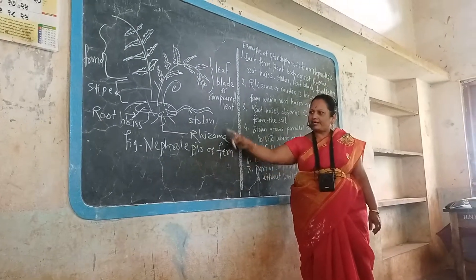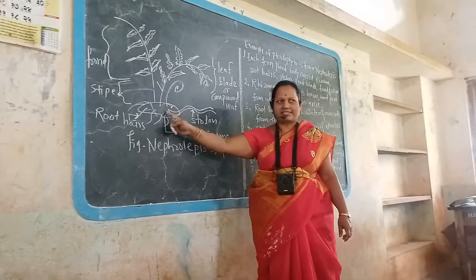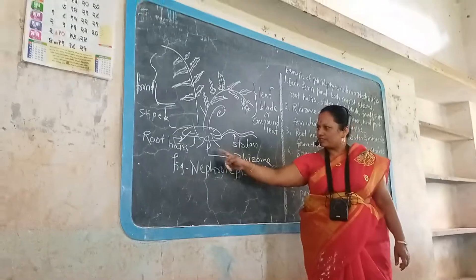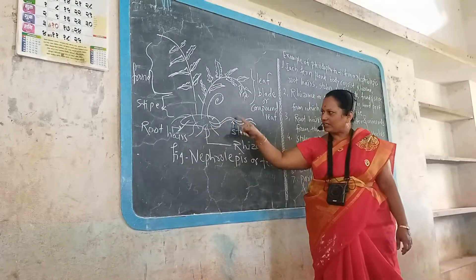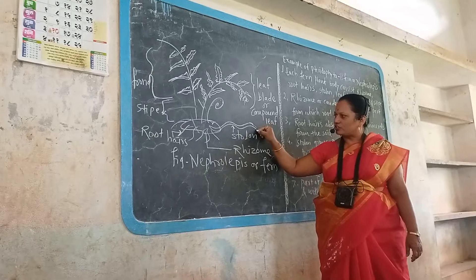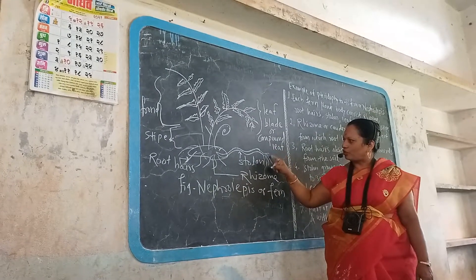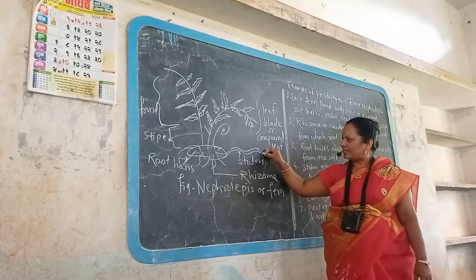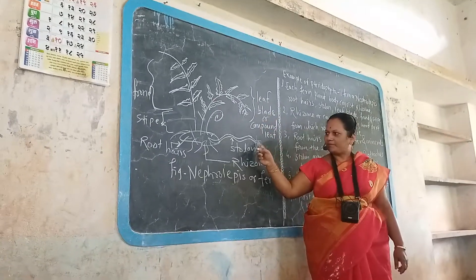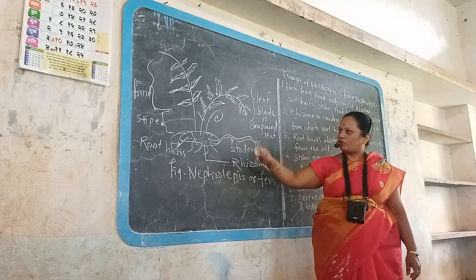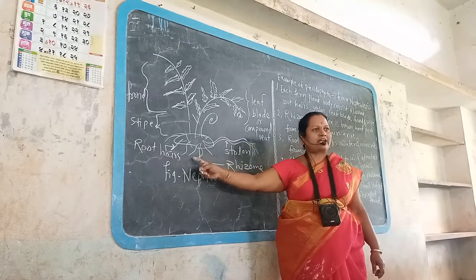Nephrolepis, or the fern plant, consists of a rhizome or codex from which small root hairs arise, and a stolon — a structure that grows parallel to the soil surface. Where the stolon attaches to the soil, root hairs grow and new fern plants arise or grow from the stolon.